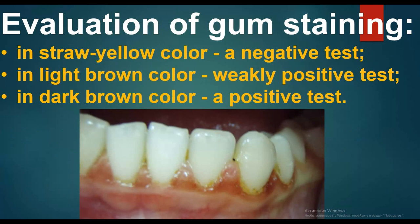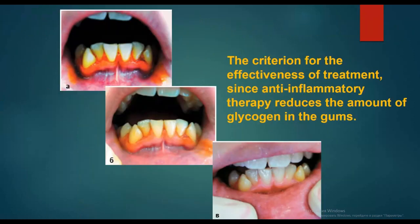Evaluation of gum staining with Schiller-PCRF solution: straw yellow color — negative test; light brown color — weakly positive test; dark brown color — positive test. This is used as a criterion for the effectiveness of treatment, as anti-inflammatory therapy reduces the amount of glycogen in the gums.